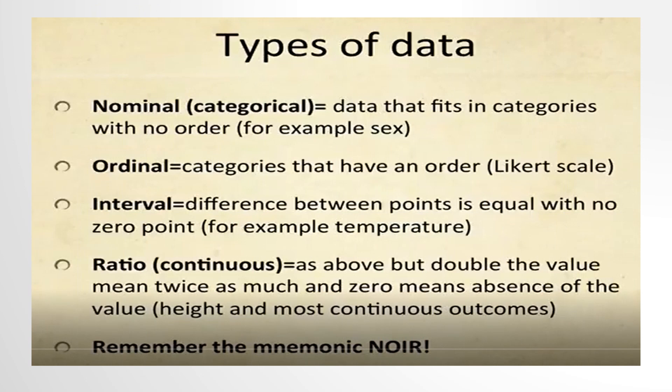Now, types of data. In statistics, there are four data measurement scales: nominal, ordinal, interval, and ratio. These are simply ways to sub-categorize different types of data, and are best understood with different examples.